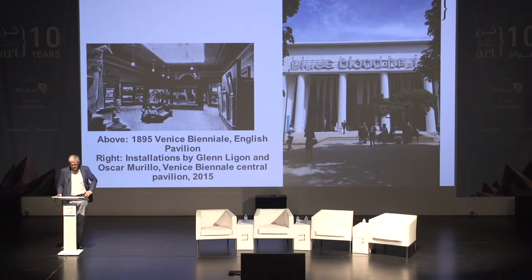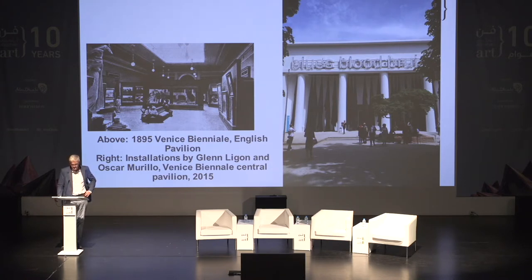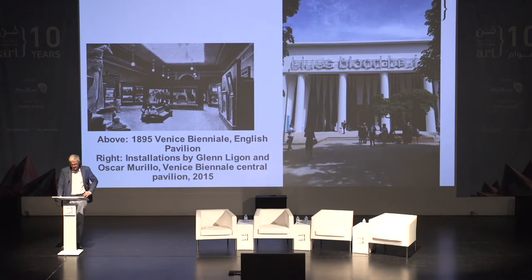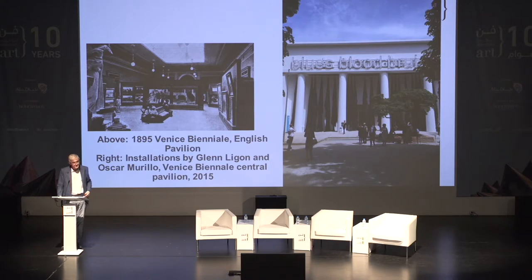The Venice Biennale, founded near the end of the 19th century in 1894 and first held in 1895, was the location where an international competition among artists became the main attraction, and nations built their own pavilions in the Giardini to showcase their national artistic heroes in what can be described as an Olympics of art. International and competition go hand in hand here, and while artist reputations were formed in Venice, the focus was on national representation. To this day, the State Department of the United States still determines which artists can represent the country at the Venice Biennale.